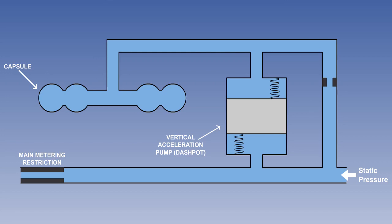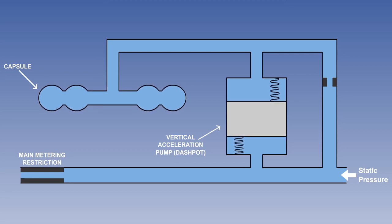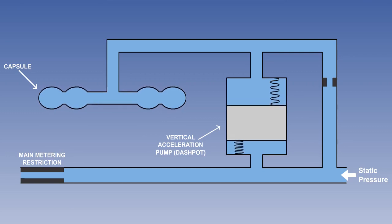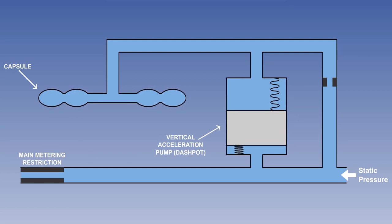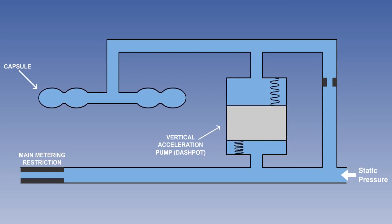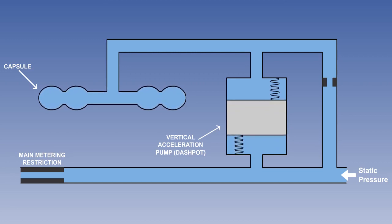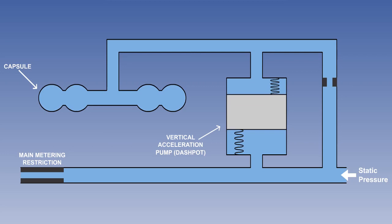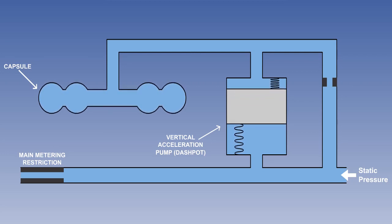We can see here how the dashpot works in the climb. The piston in the dashpot immediately falls and decreases the pressure in the capsule. The capsule contracts, and the pointer on the IVSI dial will give an instant indication of a climb. In the descent, the piston in the dashpot immediately rises and increases the pressure in the capsule. The capsule expands, and the pointer will give an instant indication of descent.